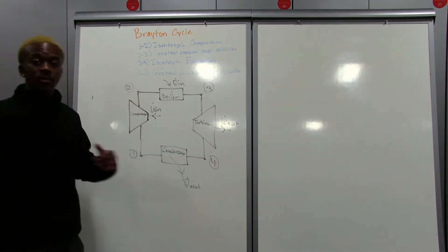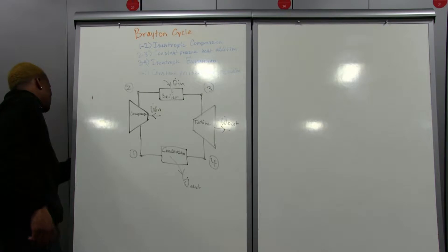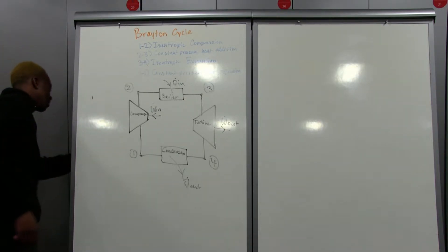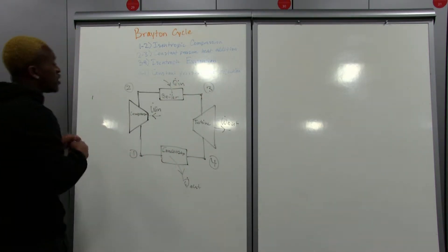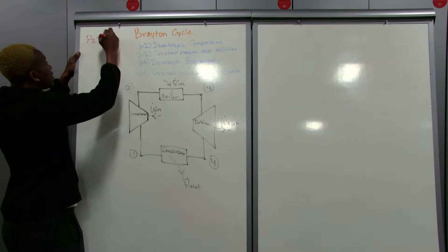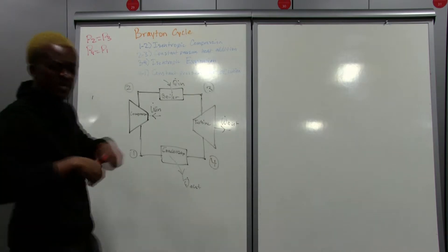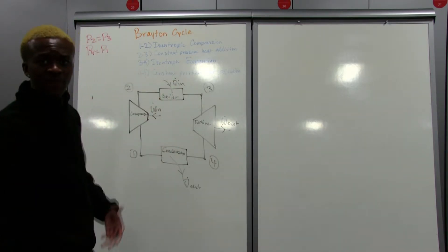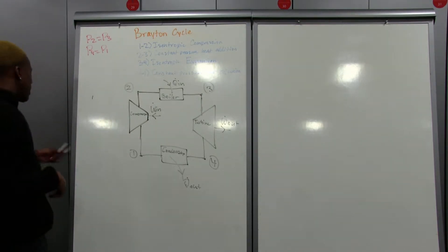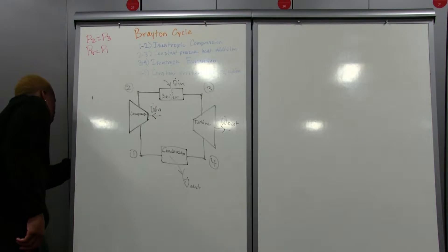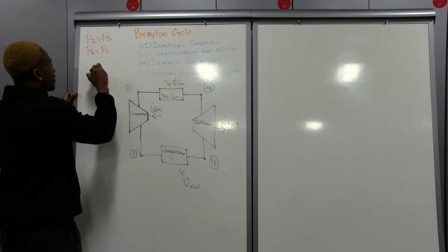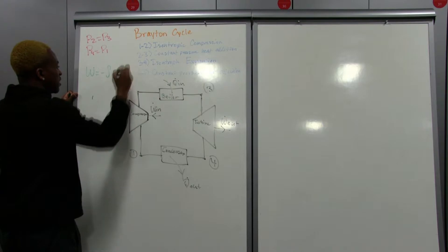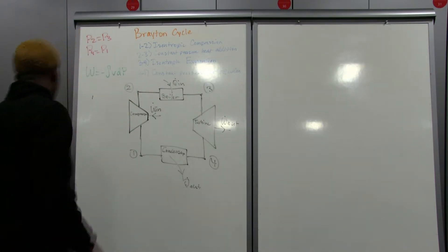The compressor and turbine are isentropic, which makes things easier. Because we have constant pressure heat addition and constant pressure heat rejection, we know that P2 equals P3 and P4 equals P1 — the boilers and condensers don't affect our pressure. Also, since we're dealing with an open system, we have flow work, so the work is equal to the negative integral of v dp.